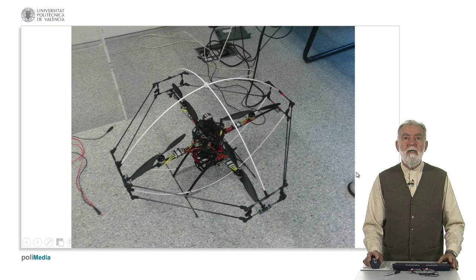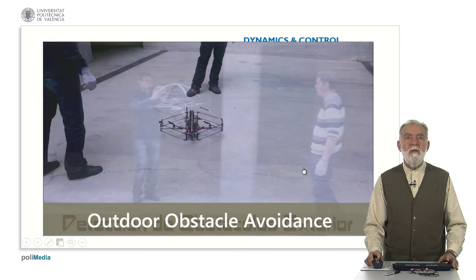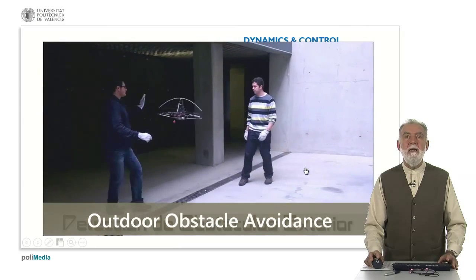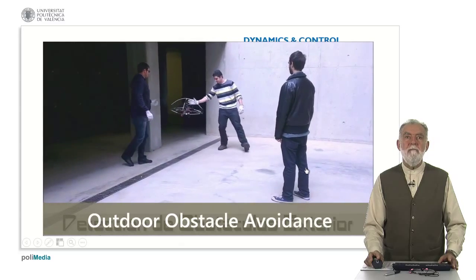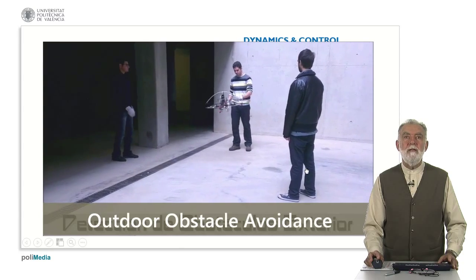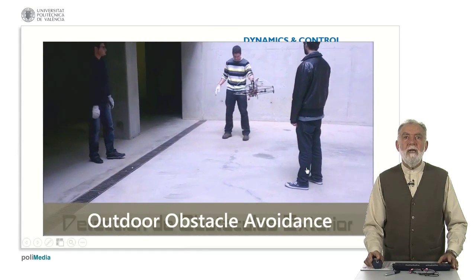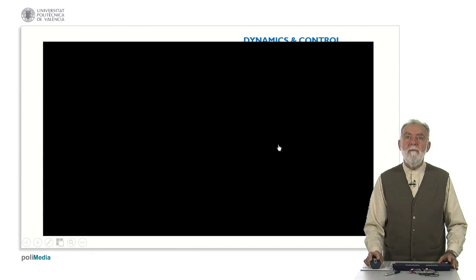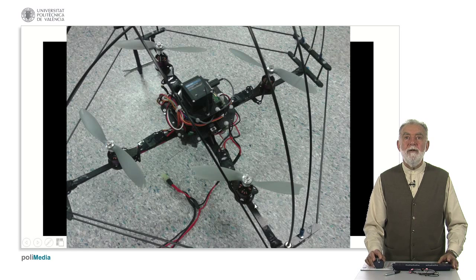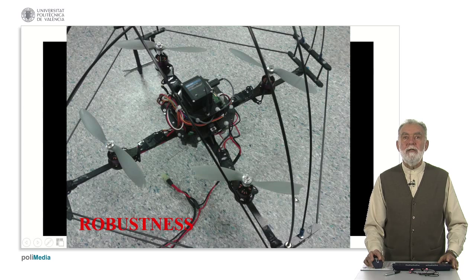We also have the possibility to avoid obstacles — here is a quadrotor. We see it flying, and we are introducing some mobile obstacles, like people in this case, and the quadrotor is reacting. There are also fixed obstacles, like a column you will see here. In this case we are outdoors, in our laboratory on the external side. We want the control designed for this system to keep operating even when one of the rotors is broken. So we ask for the robustness of the plant.